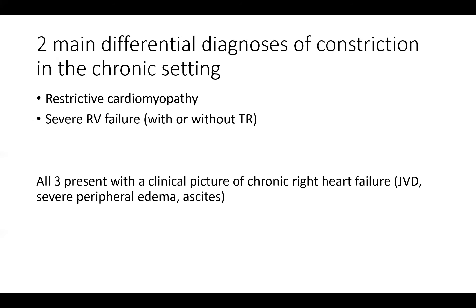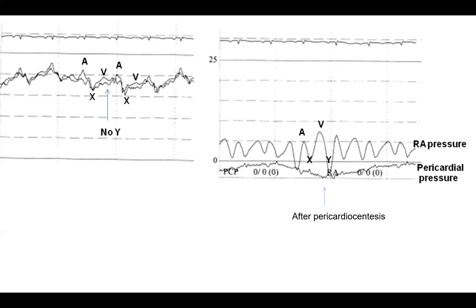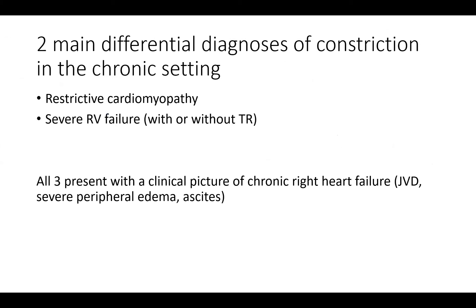Constrictive pericarditis, tamponade, and effusive constrictive pericarditis — often you don't have to differentiate constrictive from tamponade because one is acute (tamponade) and the other is chronic (constrictive pericarditis). The bigger differential of constrictive pericarditis involves those two. Actually, the most common differential everyone thinks of is restrictive cardiomyopathy.